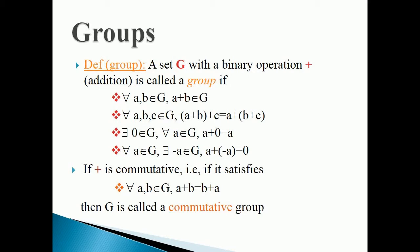There exists 0 ∈ G such that for all a ∈ G, a + 0 = a (identity); for all a ∈ G, there exists -a ∈ G such that a + (-a) = 0 (inverse).